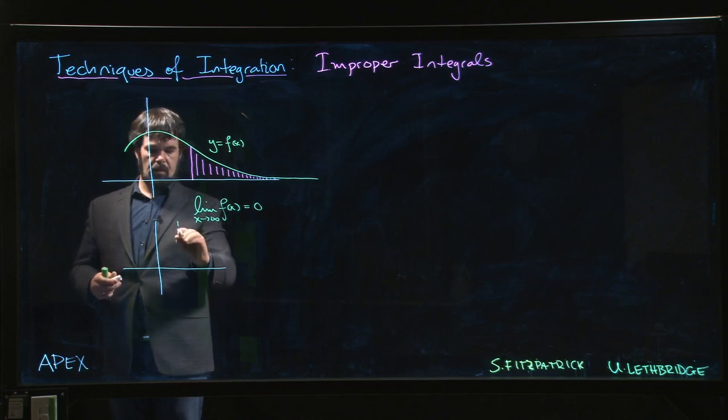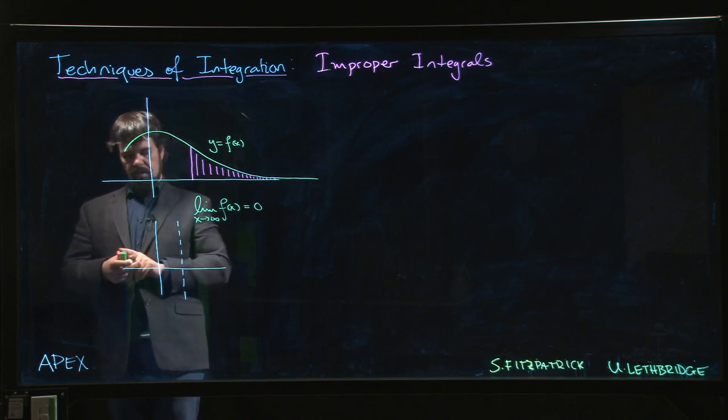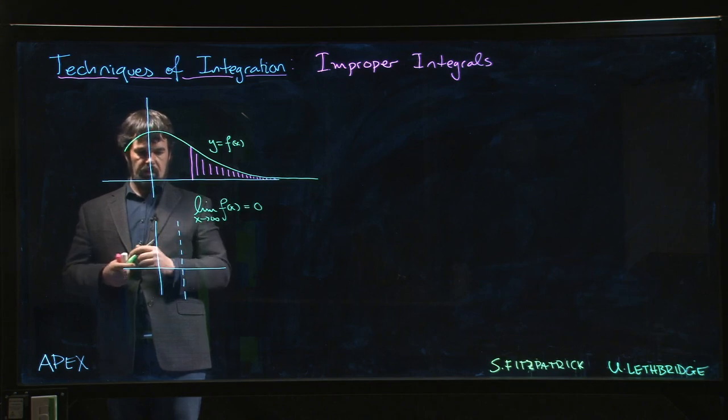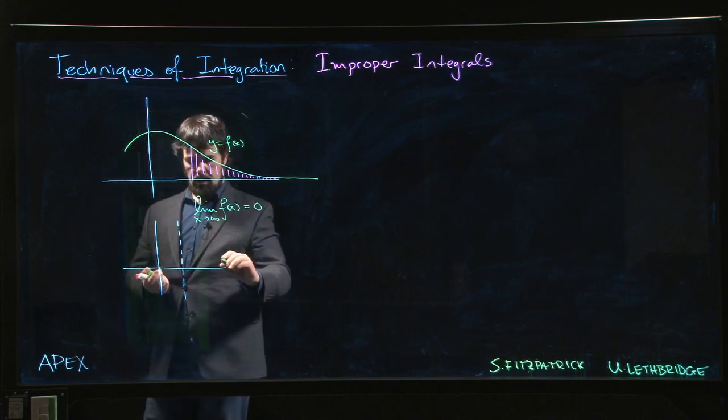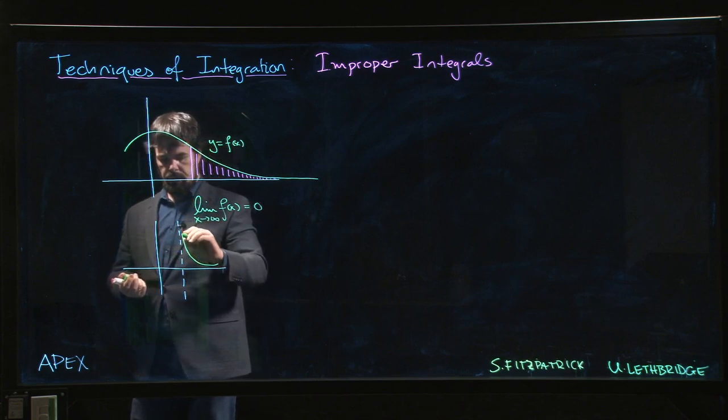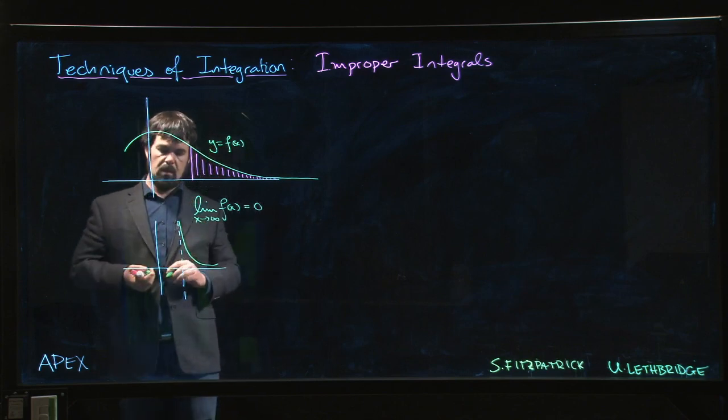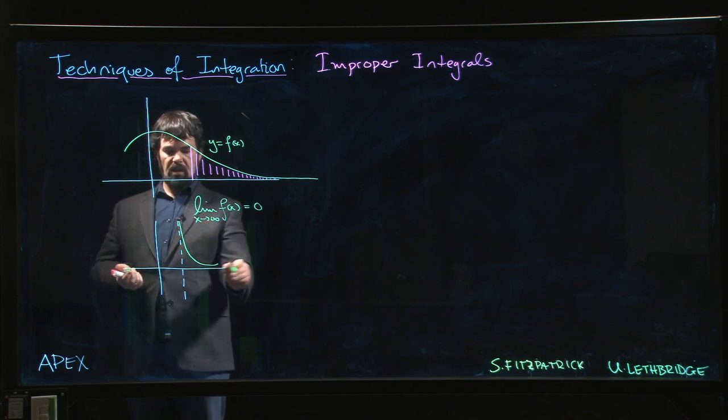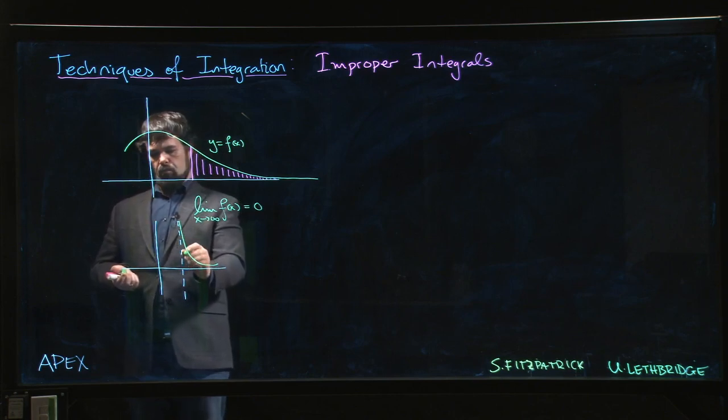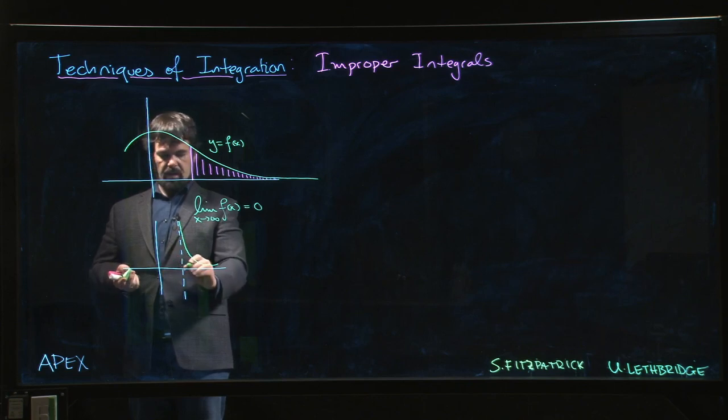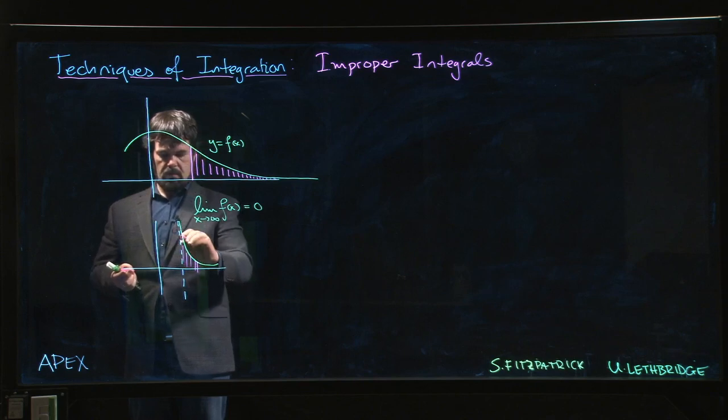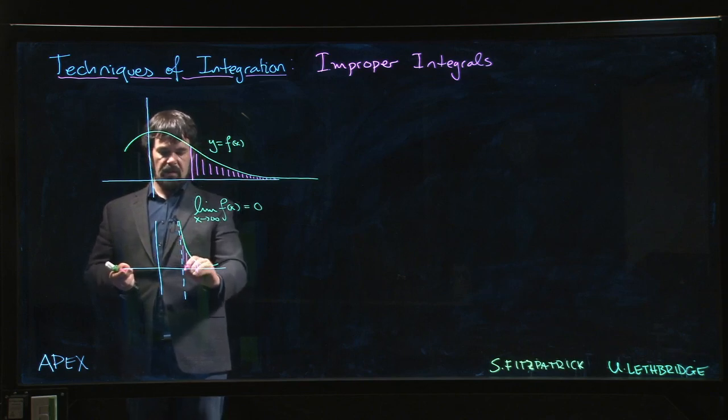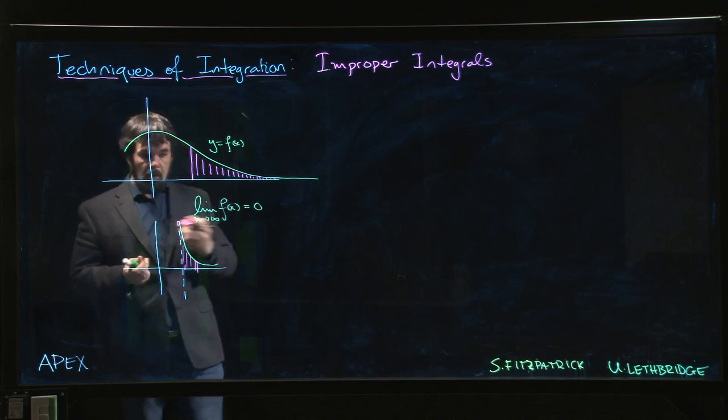We might similarly be faced with the same question in a situation where we're trying to integrate a function where there's a vertical asymptote. Maybe we approach a vertical asymptote like so, and we're interested in calculating the area from the asymptote to some point.